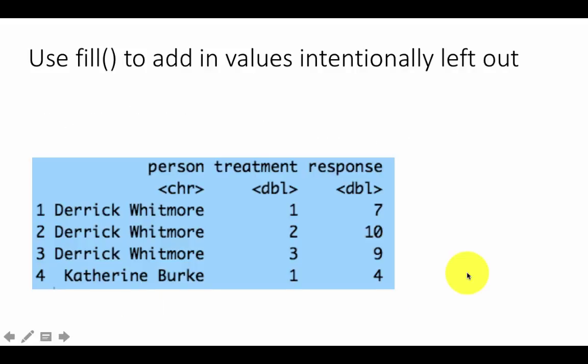You can easily do that by using the fill function. You say treatment, which was the earlier table, and say fill person. If you do that, then the system is automatically going to fill in the missing values with the previous value. The previous non-missing value for that particular column is going to be used to fill this up. Just another convenience.